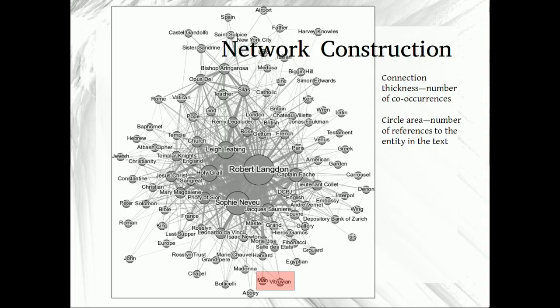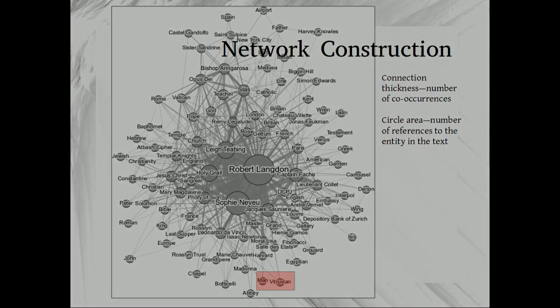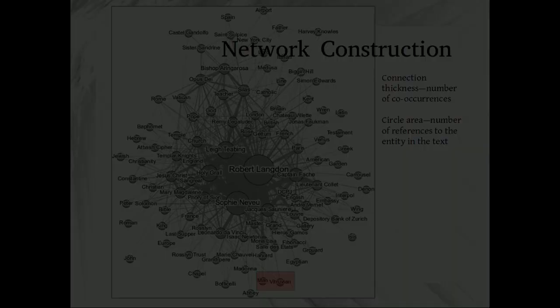It is time to construct a network of actors and places. Each circle, or node, represents an actor or place. Two nodes are connected with an arc if they co-occur in the book. Incidentally, the thickness of the connections represents the strength of the co-occurrence, and the node size represents the frequency of references to the entity in the text.